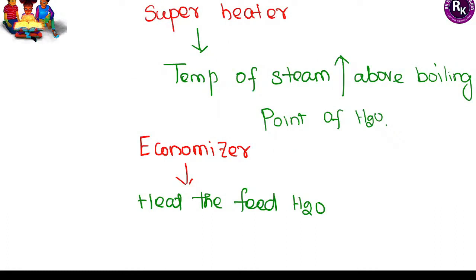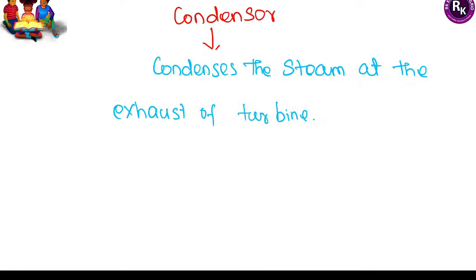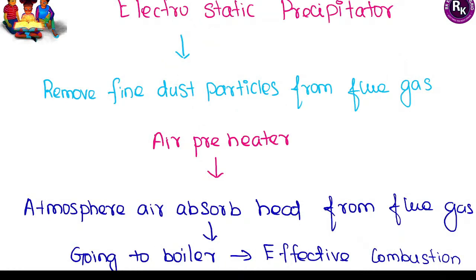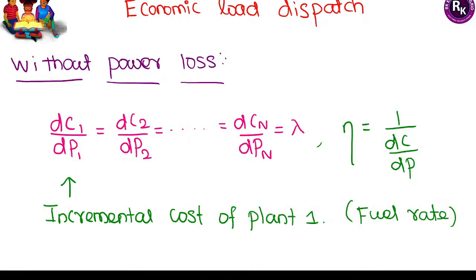In a steam power plant, the important components include: the superheater, which heats water to a high level to convert it into high-pressure steam; the economizer, which heats the feed water; the condenser, which condenses the steam coming out of the turbine back into water; the electrostatic precipitator, which removes dust particles from flue gases; and the air preheater, which heats air absorbed from the atmosphere before passing it through the boiler for effective combustion.